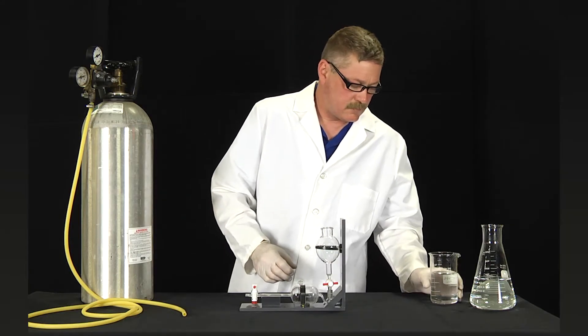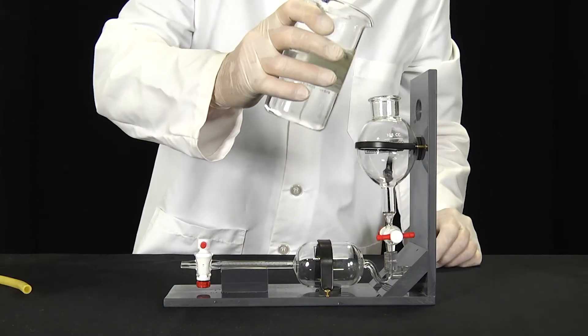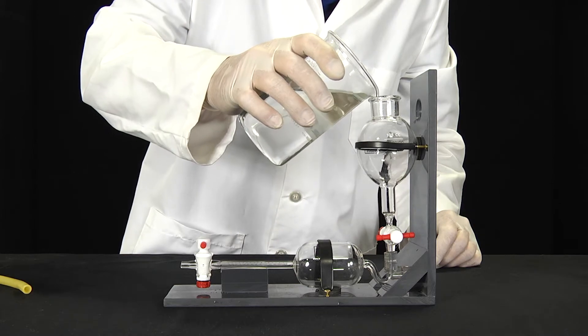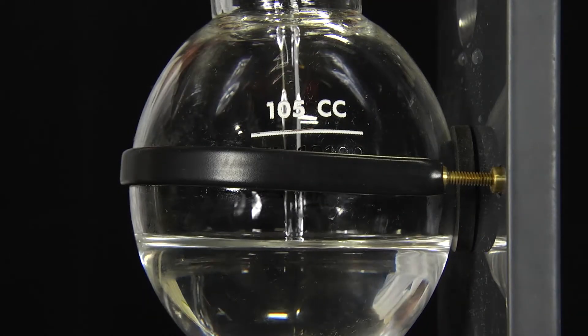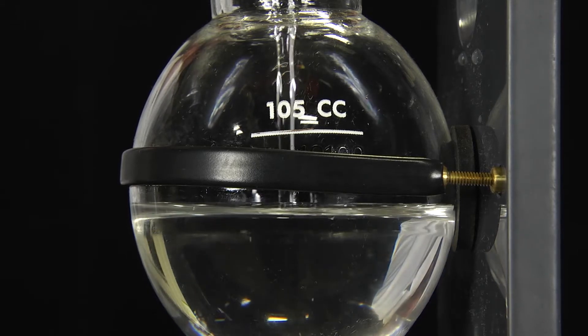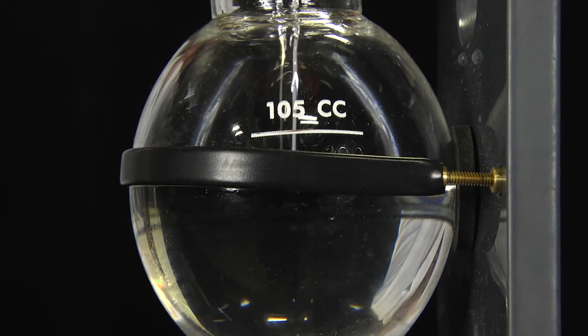A 20% solution of either potassium hydroxide or sodium hydroxide is recommended for air testing. Pour the caustic solution into the reservoir to the 105 cc line indicated on the bulb.